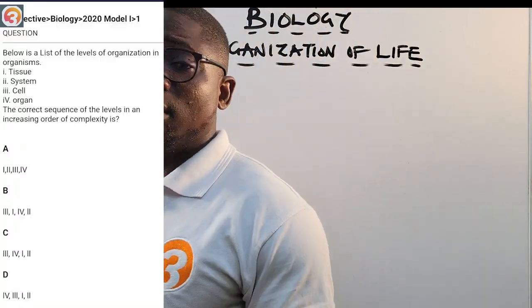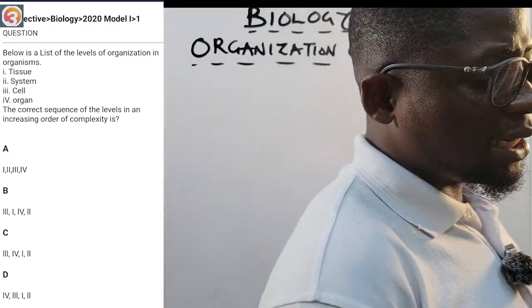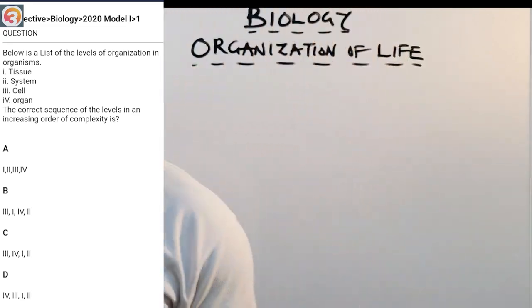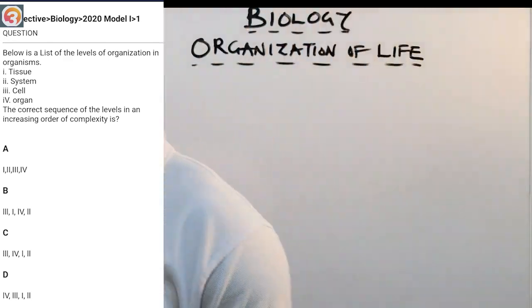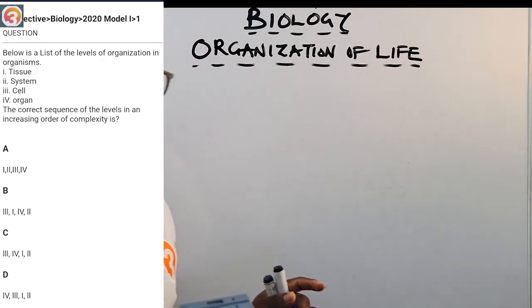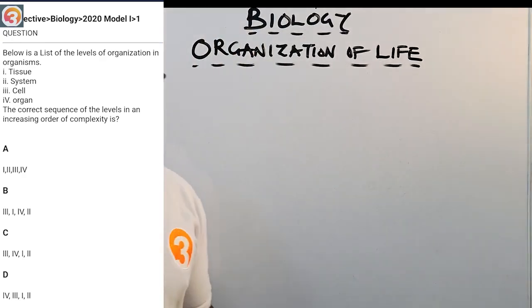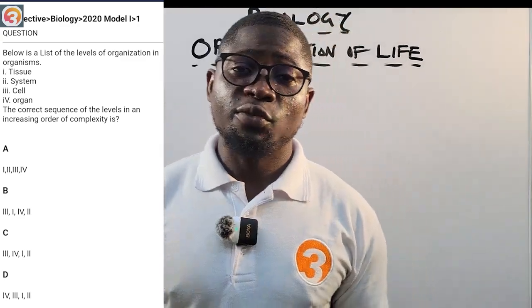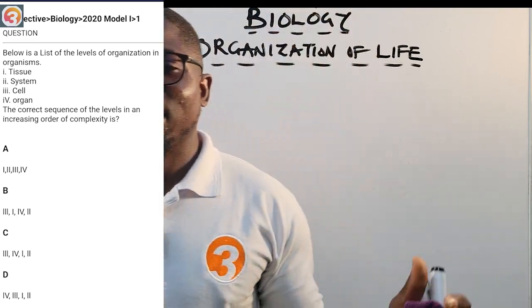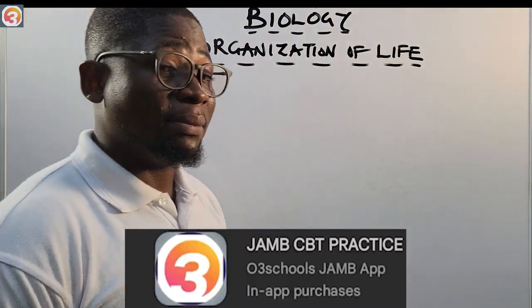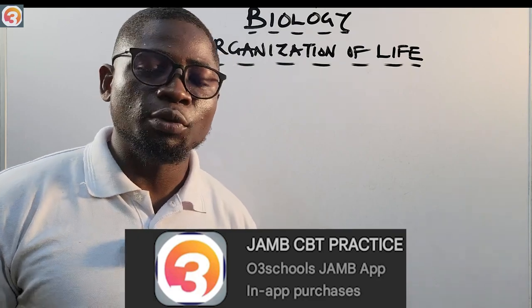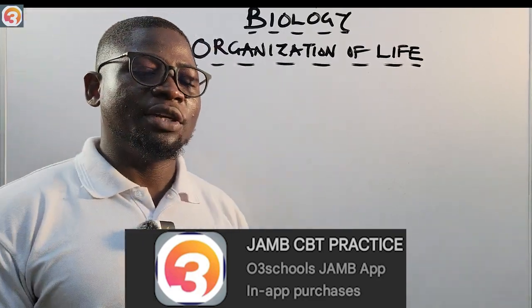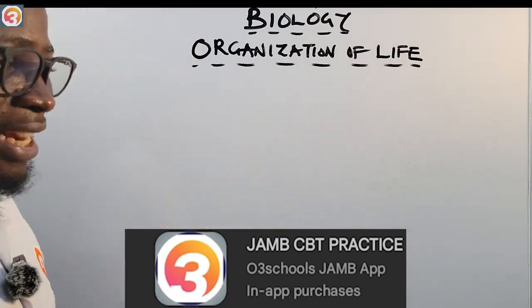Let's take a question from the app using the question search feature. It's a 2020 question number one: below is a list of the levels of organization in organisms — tissue, systems, cell, organ. The correct sequence in increasing order of complexity from smallest to highest — come back to this question at the end of class. The app has all past questions for JAMB, a classroom feature with lecture notes structured to the syllabus, topic-based questions, and a mock challenge every Saturday.